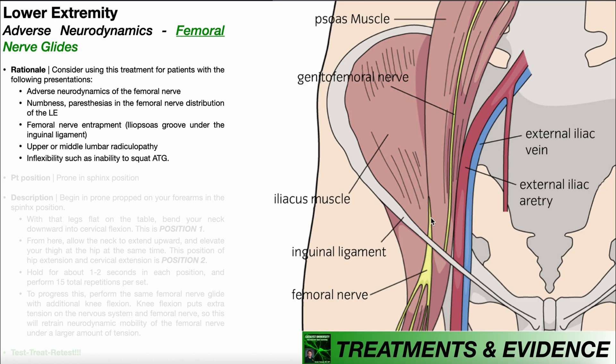Numbness, shooting pain, tingling, and even weakness in the quadricep muscles if it's prolonged. And then other things such as an upper or middle lumbar radiculopathy.